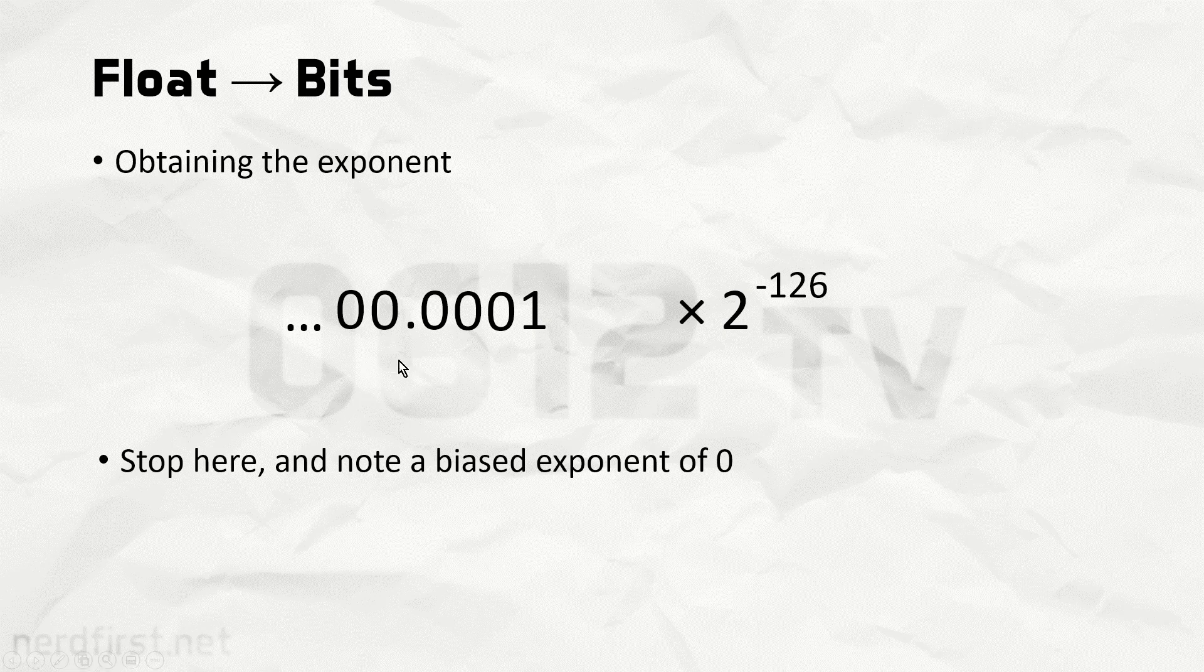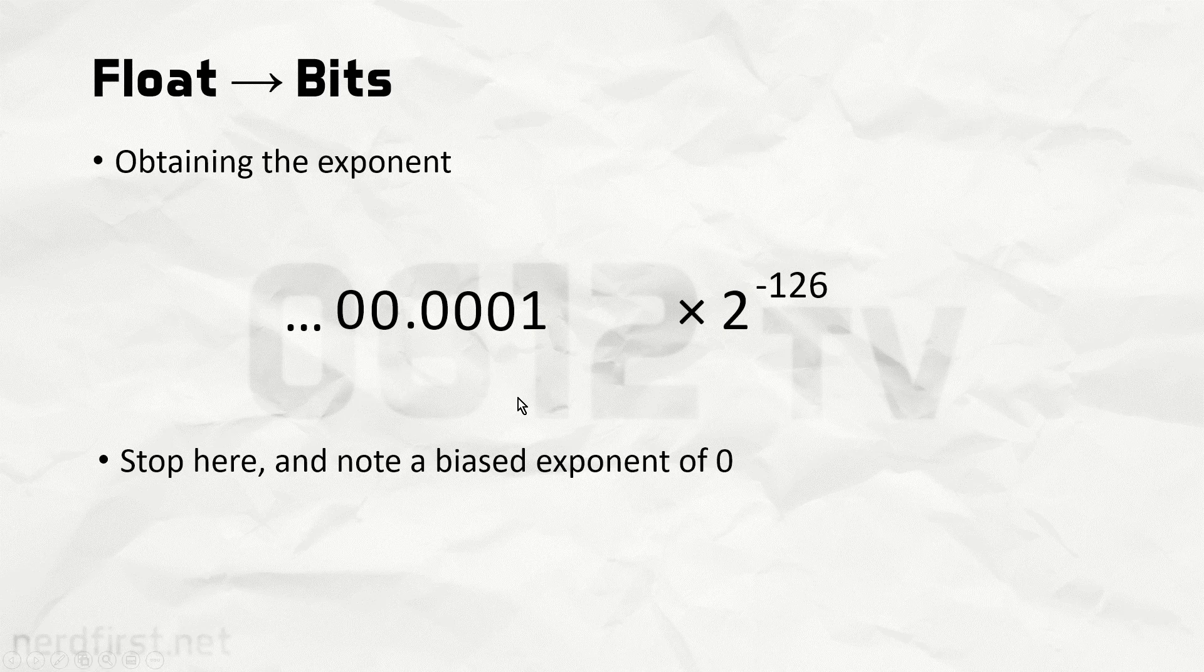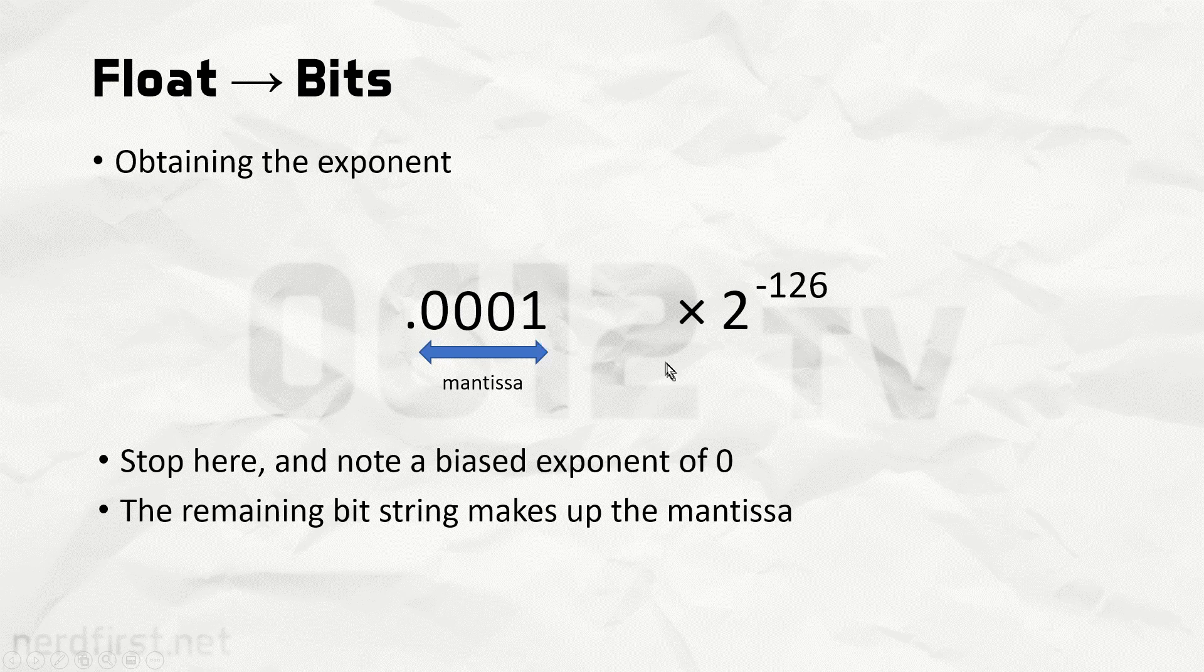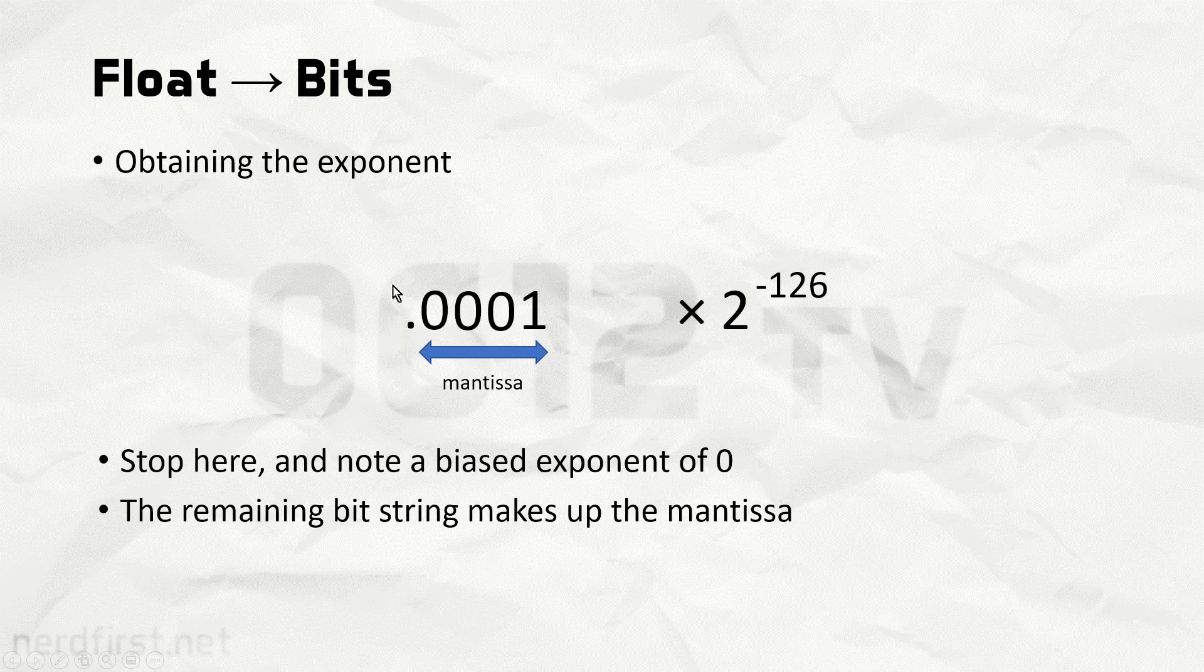The rest of the steps are fairly similar. Throw away everything you have before the decimal point, and whatever comes after is the mantissa. Really, the only difference between this step and how it usually goes is that the number before the decimal point is now 0, not 1.